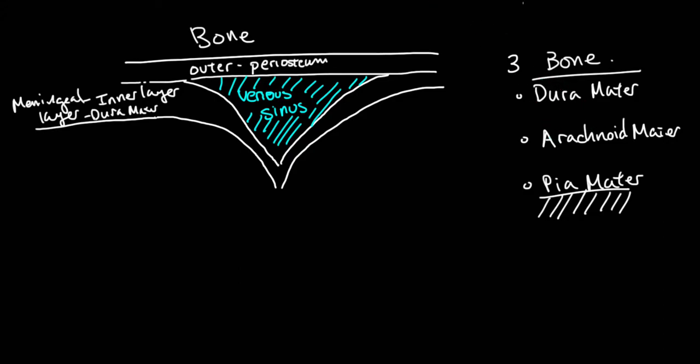Now let's move on to the arachnoid mater over here. The arachnoid mater is right underneath the dura mater, so we've got the arachnoid mater like that and it forms underneath here.